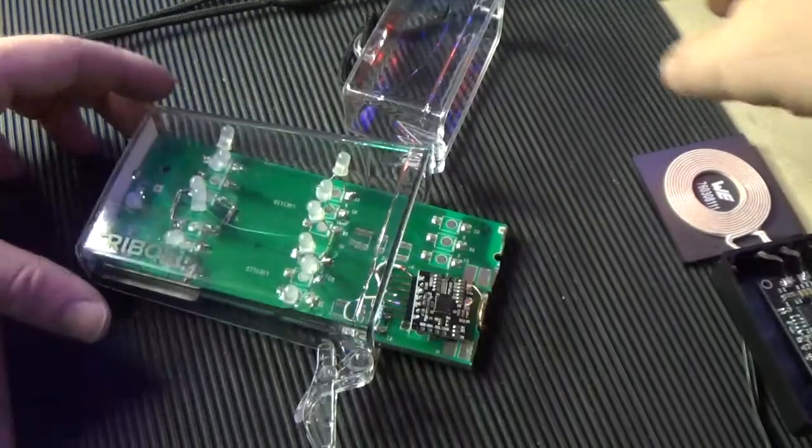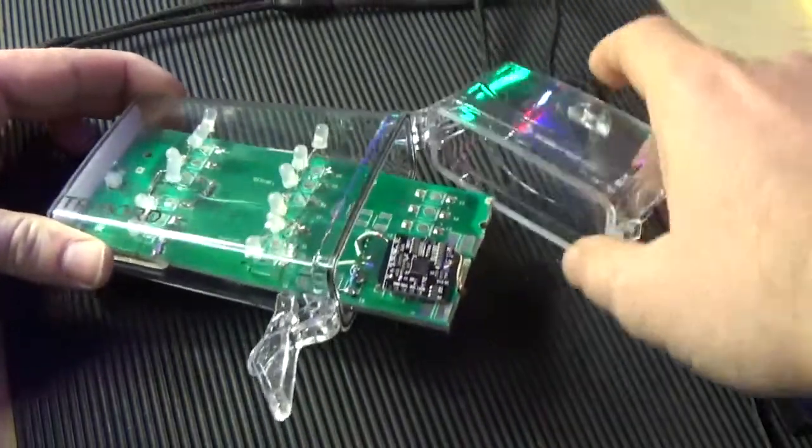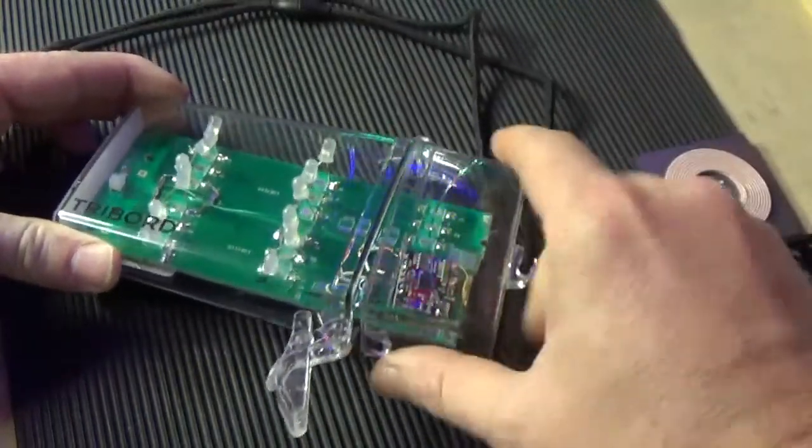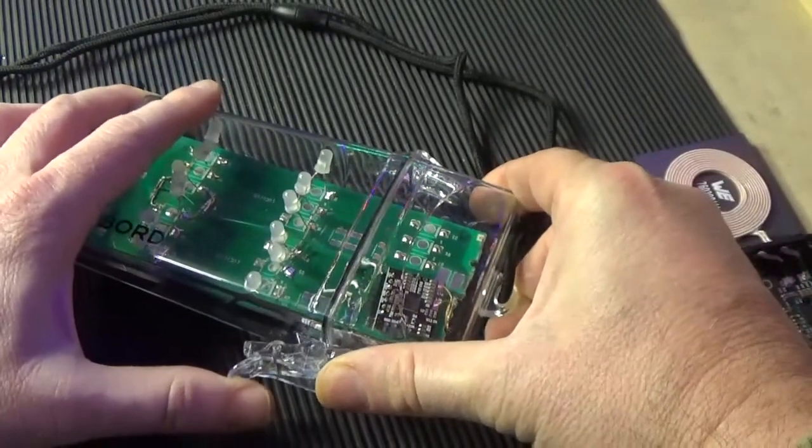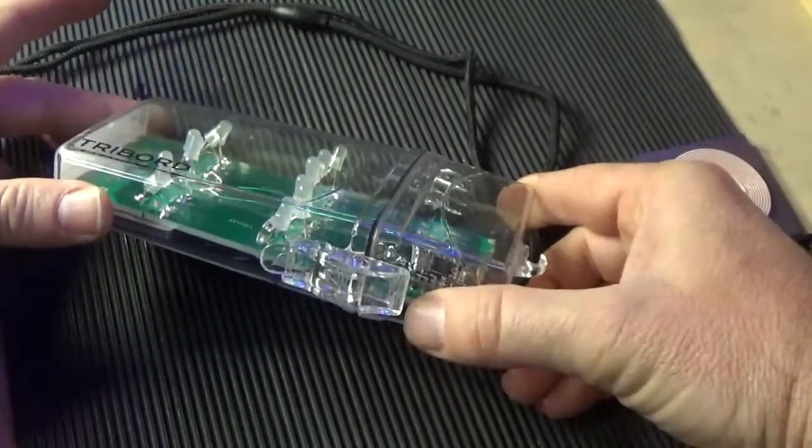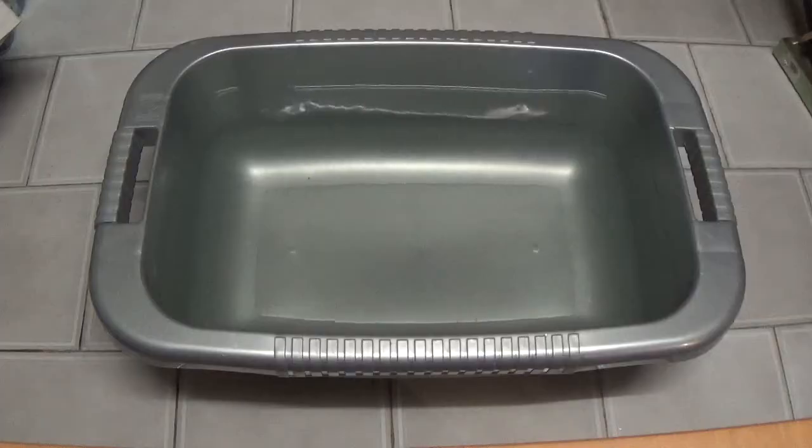Now it's time for the waterproof test. This box is IP7, so it will allow to go up to 3 feet, 1 meter. For the experiment, I fill with water this big container.